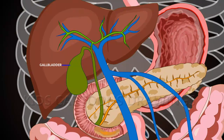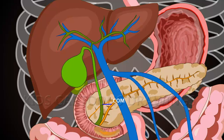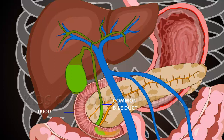Bile juice is secreted into tiny bile canals and enters the gallbladder, where it is concentrated and stored. During digestion, the gallbladder releases bile through the cystic duct into the common bile duct. Bile then enters the duodenum and mixes with chyme to help digestion.